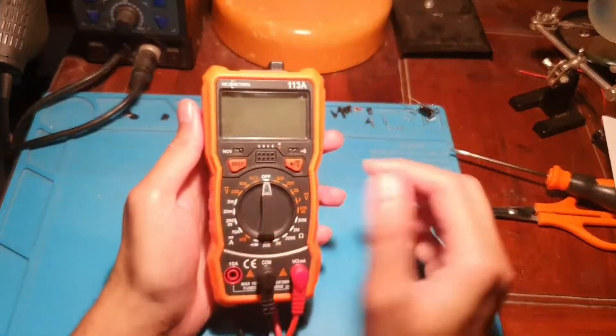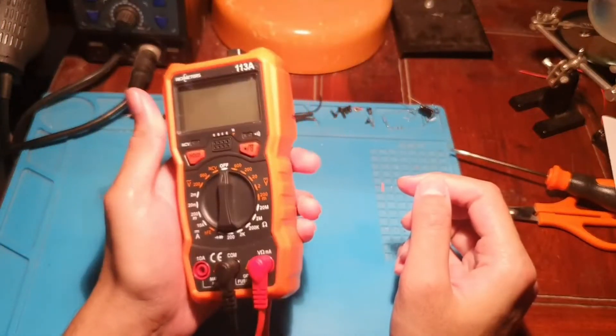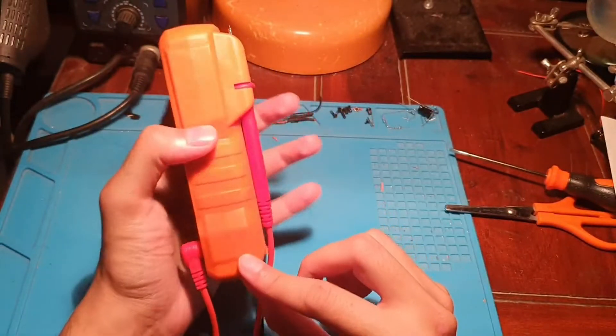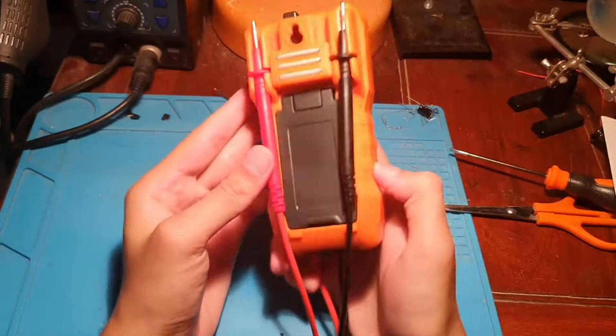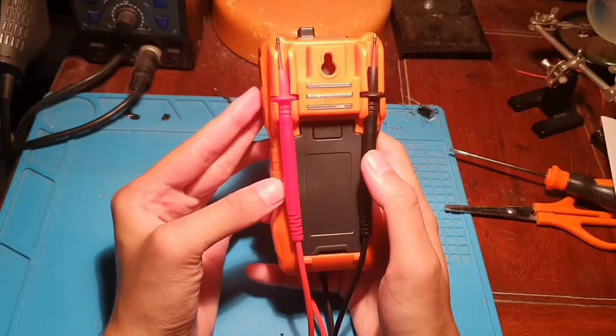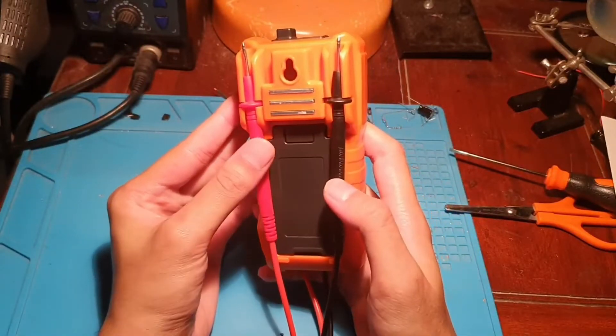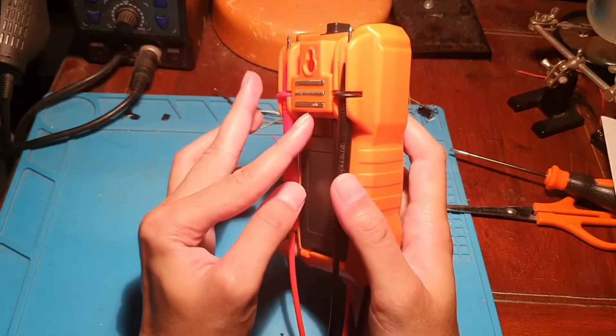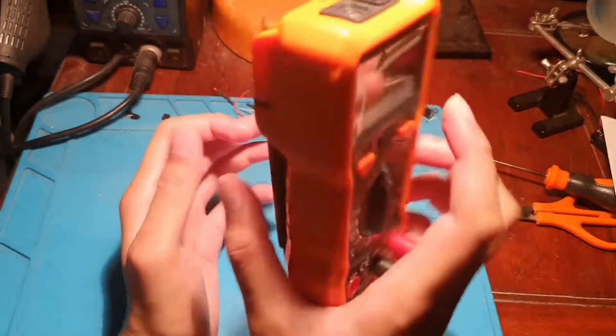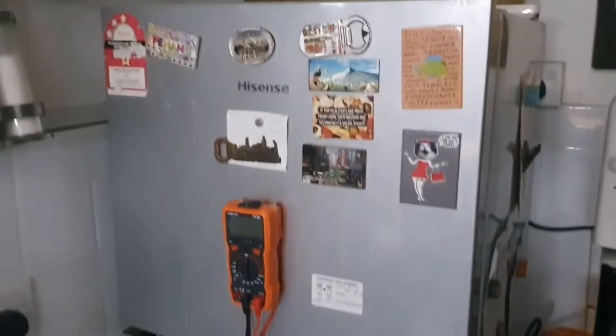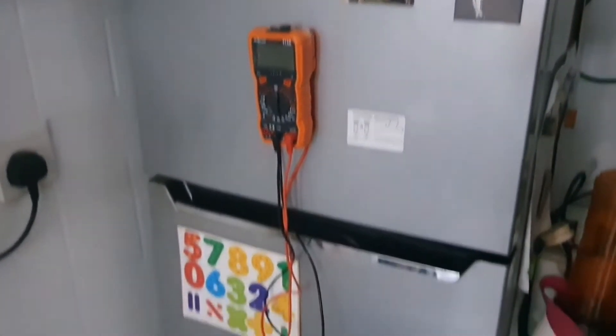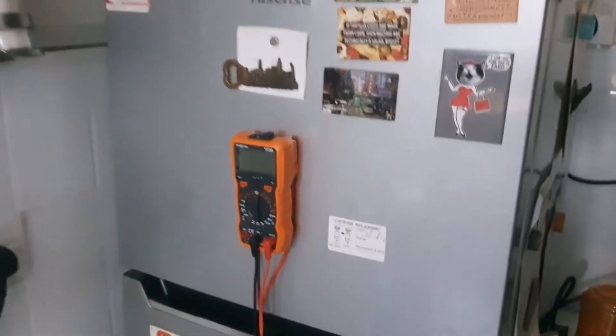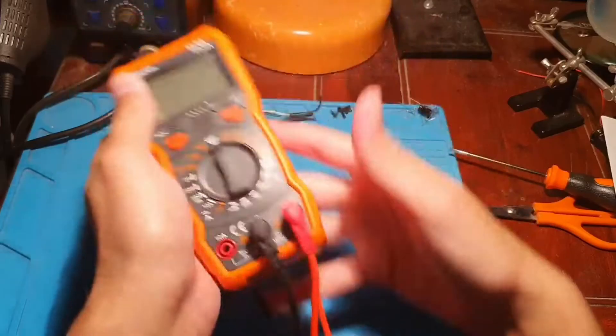Let's take a look first at the multimeter. The Richmeeter 113A has a nice orange color and kind of a rugged feeling when you hold it. At the back, we have the placement for the leads, which is kind of unique, and it has a magnet which can hold on the fridge or anywhere. If you're doing AC voltage stuff, you can hold it on stainless steel parts when you're doing AC voltage tests and stuff like that.